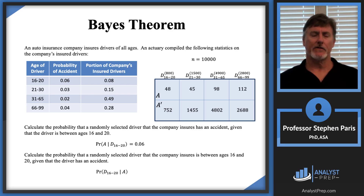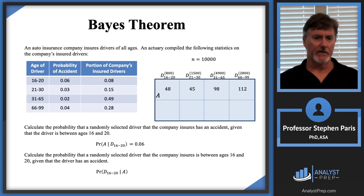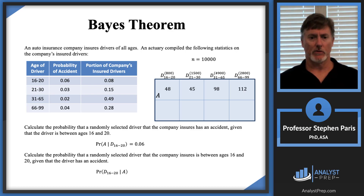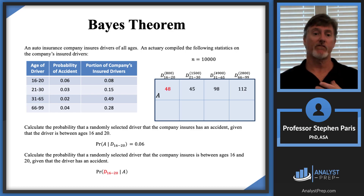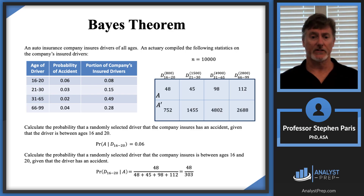Given that a person was involved in an accident, I ignore all other outcomes and focus only on the accident row of the Venn diagram. I want the probability the person was in the 16-to-20 age group, so I take 48 out of the total 303 accident outcomes, giving 48 over 303, which is 15.8%. That's my answer.